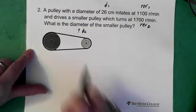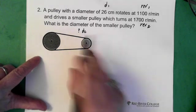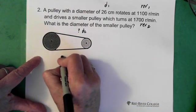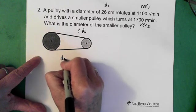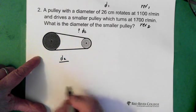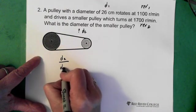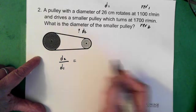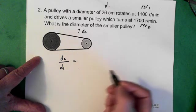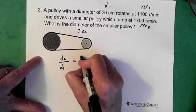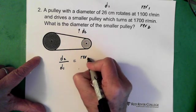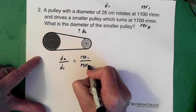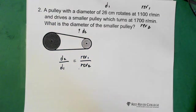So we want our diameter 2. I like to put the thing I'm looking for in the numerator. So we have diameter 2 over diameter 1. And the inverse on the other side. So then we have the revolutions 1 over the revolutions 2.